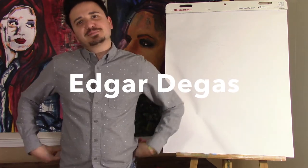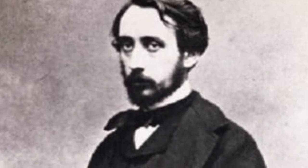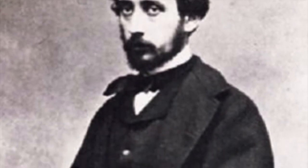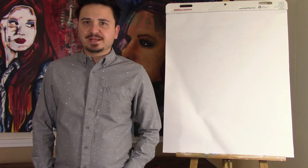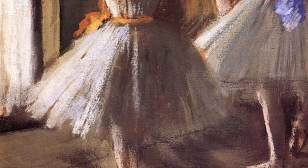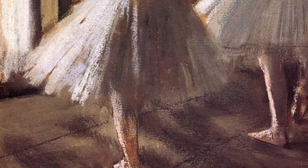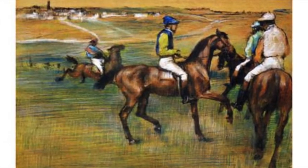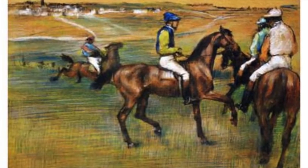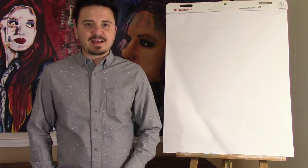Today we're going to talk about an artist by the name of Edgar Degas. Edgar Degas is mostly known for his portrayal of ballerinas. He did a lot of them in oil paints, but a lot of them were done in pastels. He also did scenes from the racehorses at the racetrack and things like that.